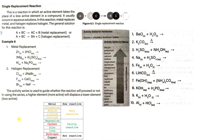Let's proceed to the second example. We have a metal here, and in this compound, the metal is aluminum. If we check the activity series, magnesium is over here and aluminum is over here. We can see that magnesium is much more active compared to aluminum. So magnesium will replace aluminum in this compound.